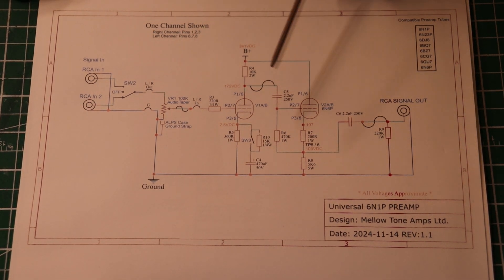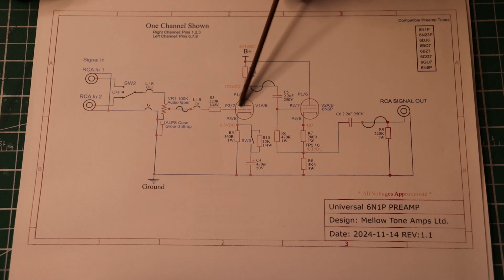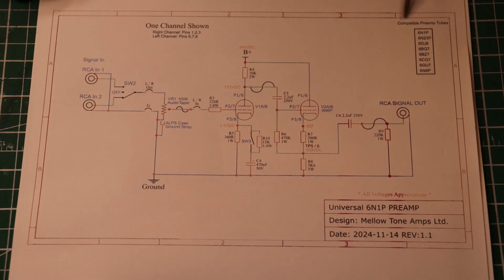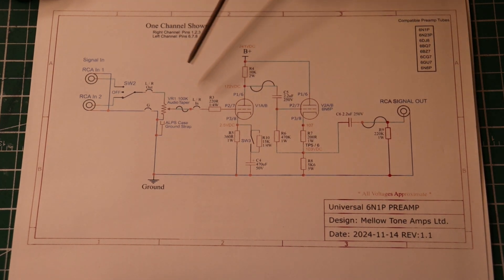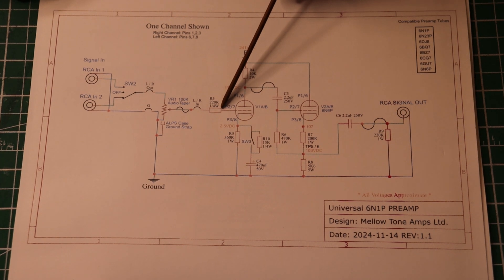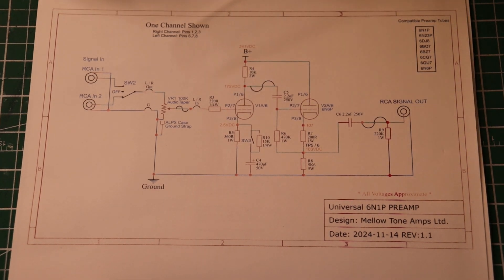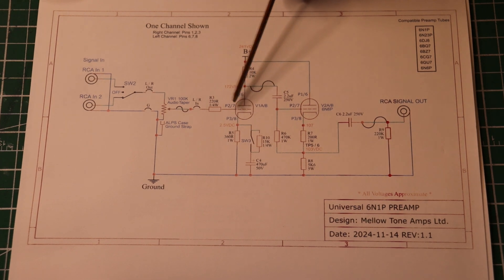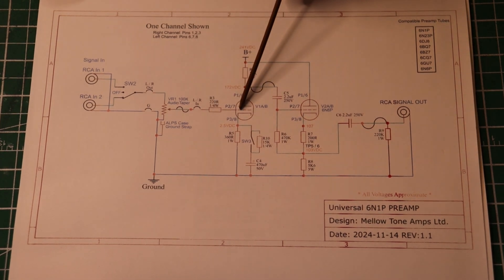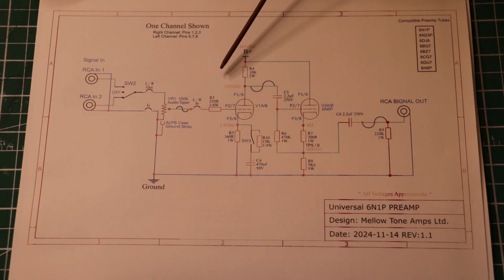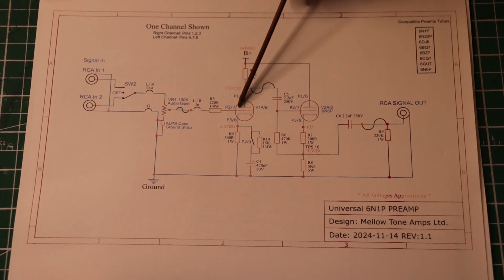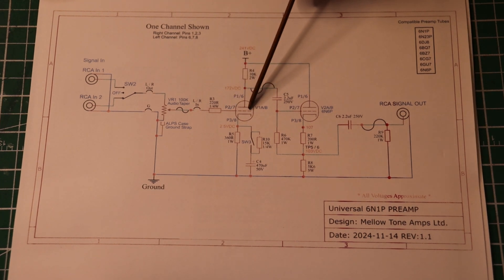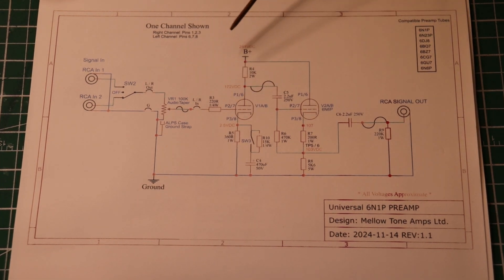We enter the grid of the gain stage, the 6N1P or whatever tube you're rolling in. There are quite a few tubes you can roll in the gain stage. It comes through a grid stopper resistor, this little quarter watt 220R. What that does is it basically prevents or helps mitigate this wire coming in from becoming an antenna. That's why they call it a grid stopper. The grid is extremely sensitive to signals.